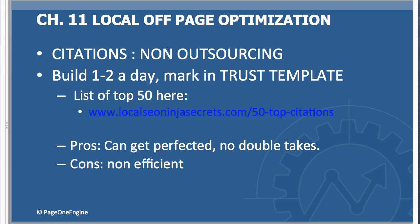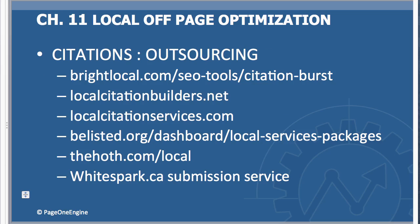The pros of doing it yourself is you can get it perfected to a tee with all the keywords in there and make sure you don't have to go back and do it again. The cons are that building citations takes a lot of work and effort, so it's going to be a longer process. You've got to balance the two — whether you want to do the work yourself or hire an outsourcer — and it all depends on the budget you have for the project.